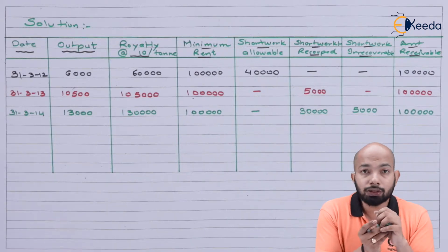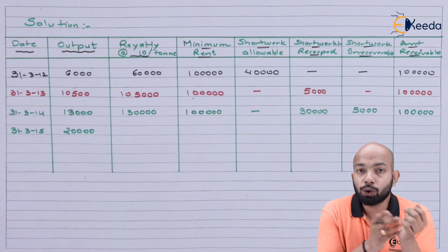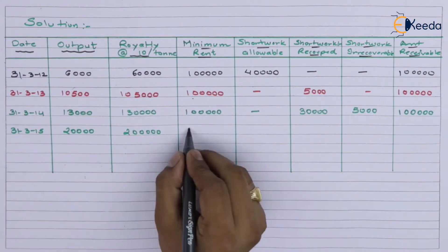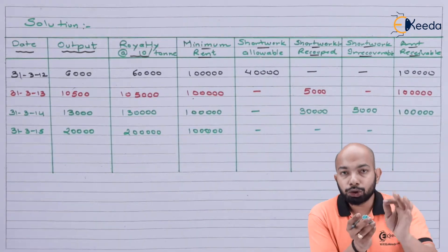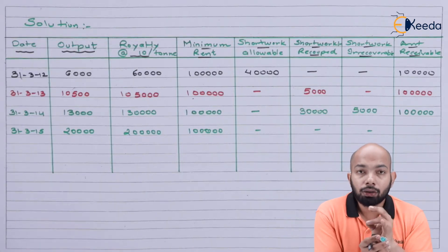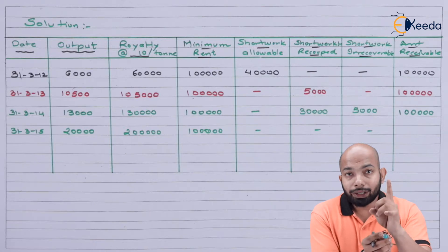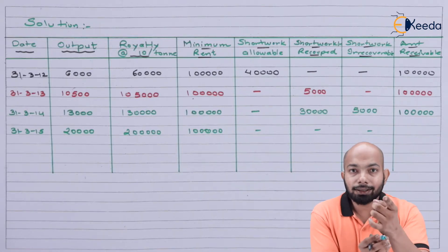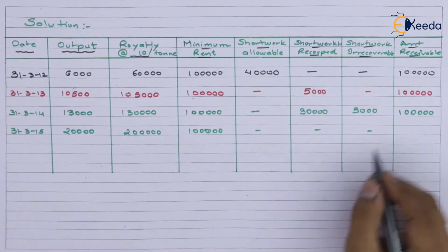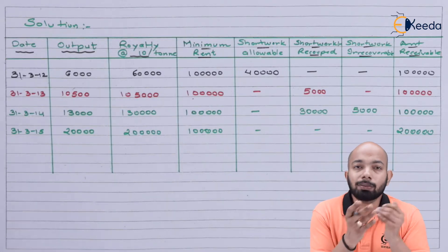For 31st March 2015, the output is 20,000 tons so royalty is ₹2 lakh, and the minimum rent is ₹1 lakh. There is no short working allowed, no short working recovery, and no adjustment. As the lessor, you claim the highest amount — ₹2 lakh — so the amount receivable from the lessee is ₹2 lakh. With this, the calculation is complete.